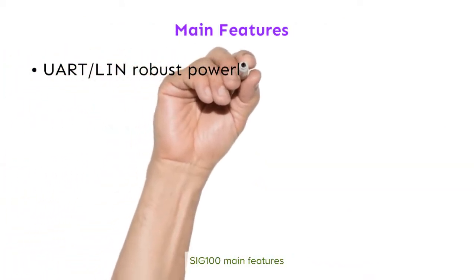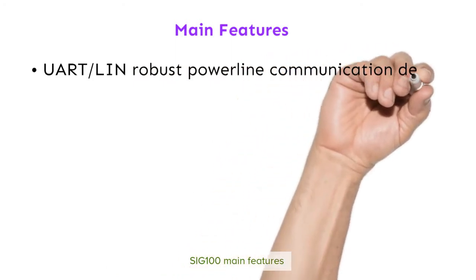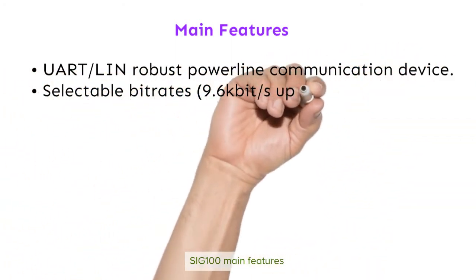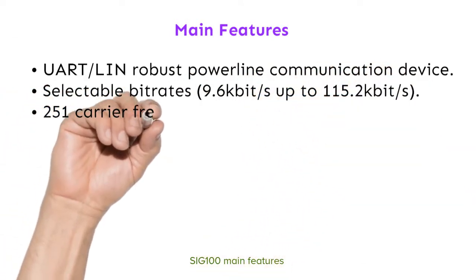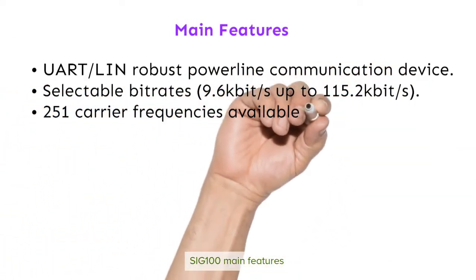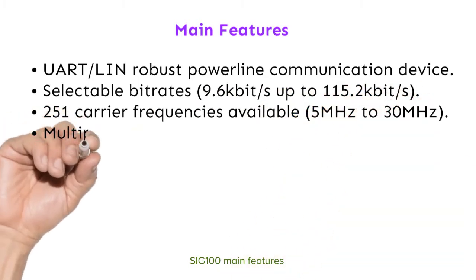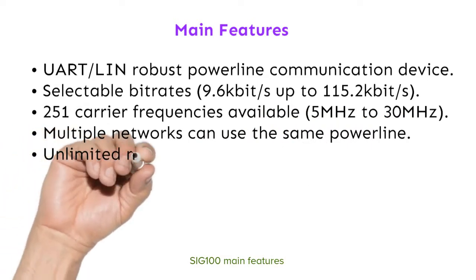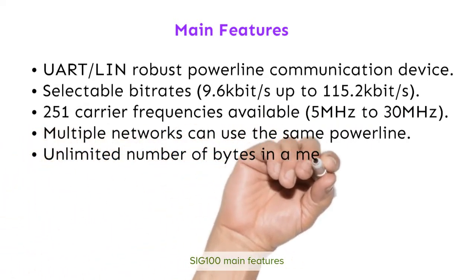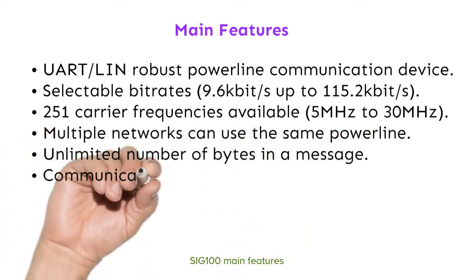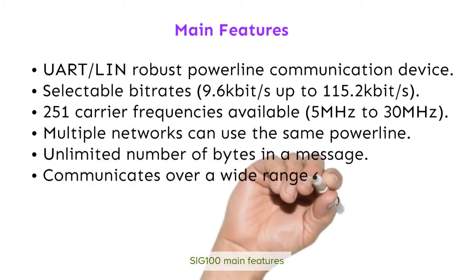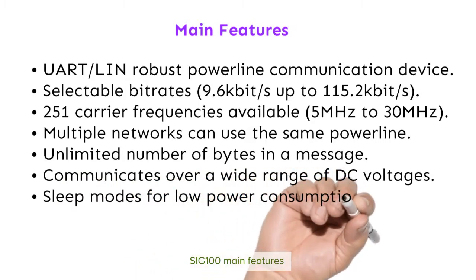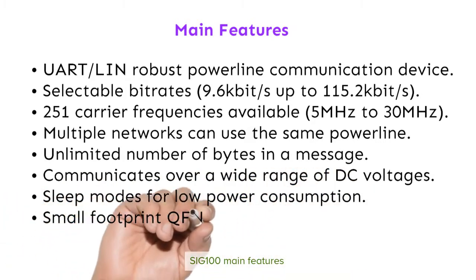SIG100 main features: UART-LIN robust powerline communication device. Selectable bitrates from 9.6 up to 115.2 kilobits per second. 251 carrier frequencies available from 5 up to 30 MHz. Multiple networks can use the same powerline. Unlimited number of bytes in a message. Communicates over a wide range of DC voltages. Sleep modes for low power consumption. Small footprint QFN32 5x5mm package.